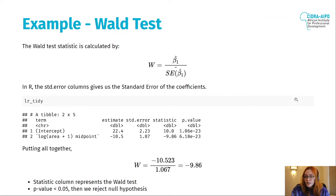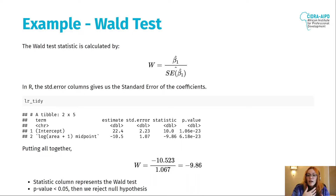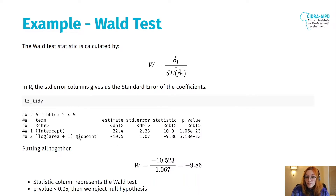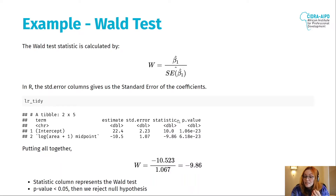The first one I'll show is the Wald test. The statistic we need to calculate is beta-one-hat divided by the standard error of beta-one-hat. The beta one is minus 10.5 here. The standard error comes in the second column — std error — and we can see that for beta one it is 1.07. When we do this division, we get minus 9.86, which is exactly the value in the statistic column.